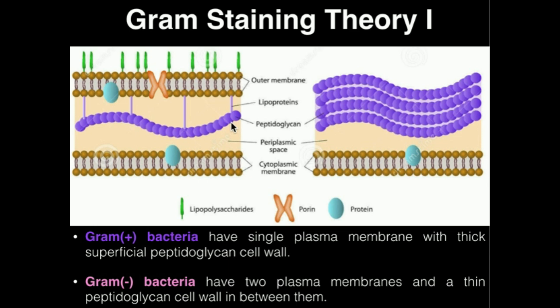The basis of gram staining is whether or not the peptidoglycan layers — the thin one of gram-negative or the thick one of gram-positive — can actually retain a dye known as crystal violet. Don't ever think of gram-positive and gram-negative in terms of the number of membranes. We're only really concerned about whether it's a thick layer of peptidoglycan, as in gram-positive, or a thin layer, as in gram-negative.